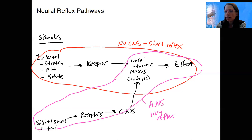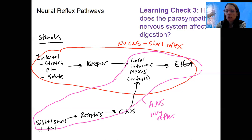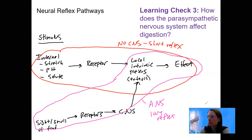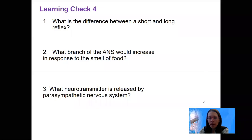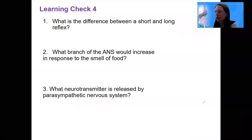Let me ask you this learning check. How does the parasympathetic nervous system specifically affect digestion? It decreases, it increases it. It's going to increase salivation, increase motility. We'll see that. We'll see that more. And we've got another learning check right away again.